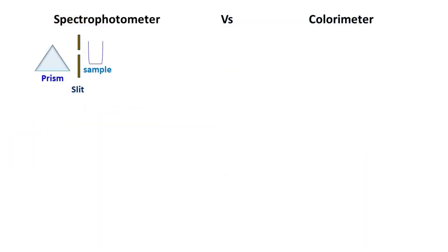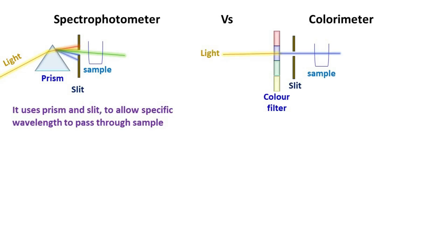Spectrophotometer uses a prism and a slit to allow specific wavelength of light to pass through the sample. Whereas colorimeter uses a filter instead of prism.